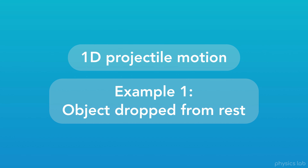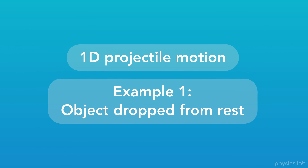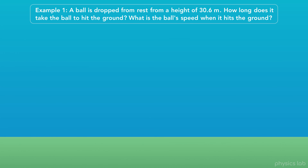Let's start with the simplest example of 1D projectile motion: an object dropped from rest. A ball is dropped from rest from a height of 30.6 meters. How long does it take the ball to hit the ground, and what is the ball's speed when it hits the ground?